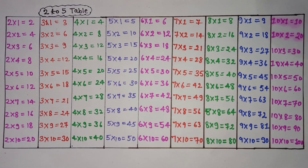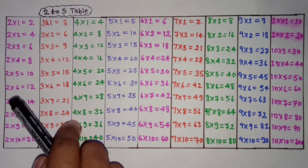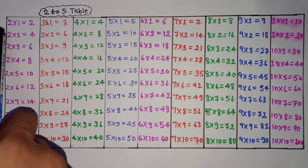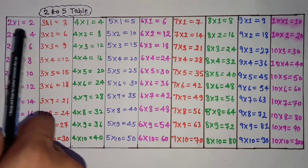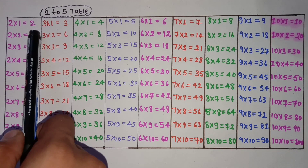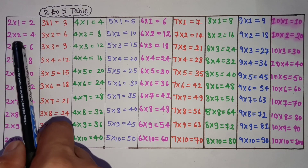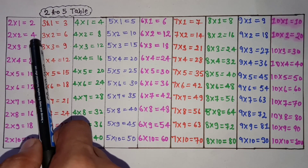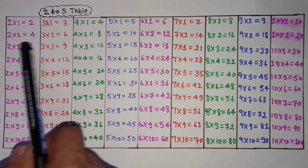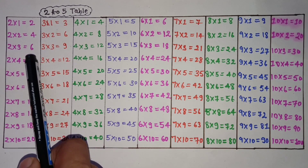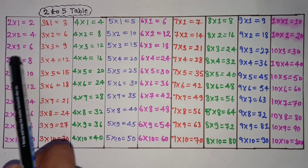2 times 2 table in English. 2 1 is 2, 2 2 is 4, 2 3 is 6, 2 4 is 8.